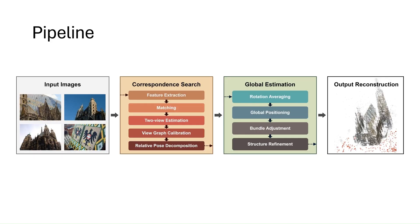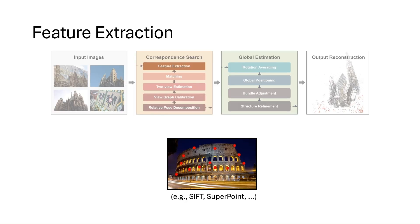An overview of our pipeline is as follows. Given a set of input images, we first conduct a correspondence search, then perform global estimation to obtain the output reconstruction. More concretely, we begin by extracting features using descriptor-based methods such as SIFT and SuperPoint.